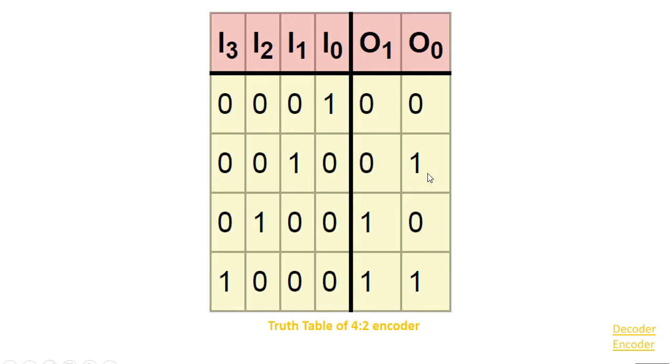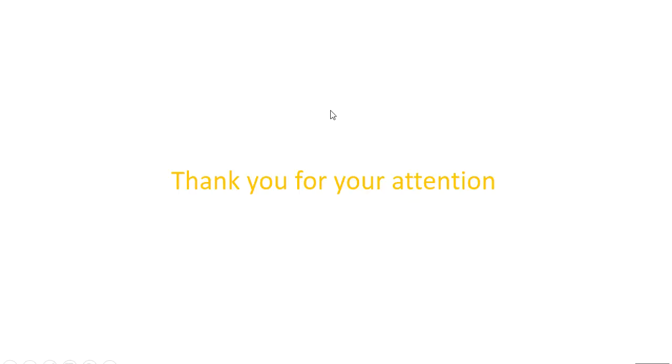And then if i3 is 0, i2 is high or 1, i1 is 0, and i0 is 0, we have q1 high and q0 zero. In the last, we have high in i3, and i2 is 0, i1 is 0, i0 is 0, so the output will be q1 is high and q0 is high.